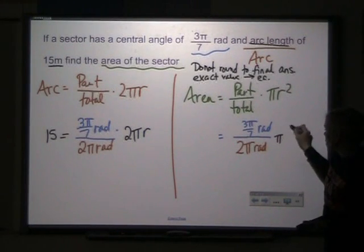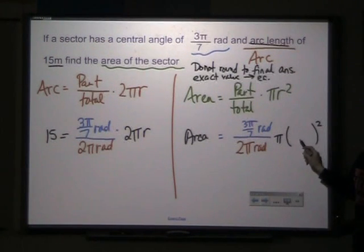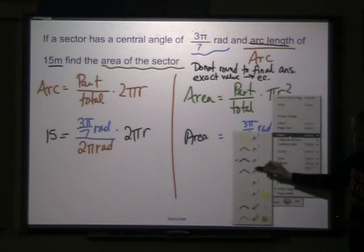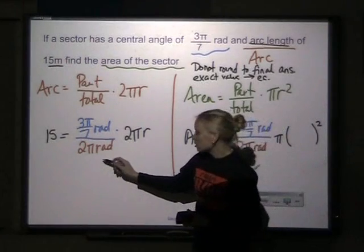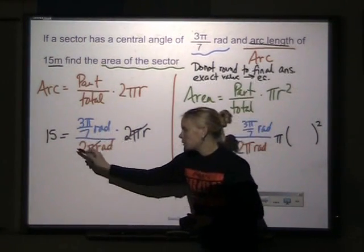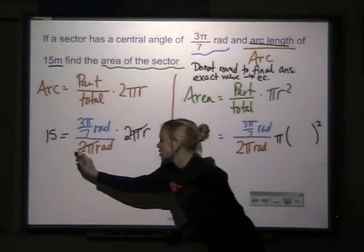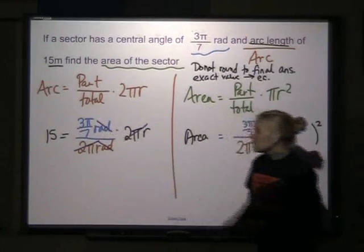You'll notice in order to finish this problem and find my area, I need my radius. So I am going to go through this process to find r. I can cancel 2π, 2π. That whole 2π should cancel. My radians and my radians cancel.